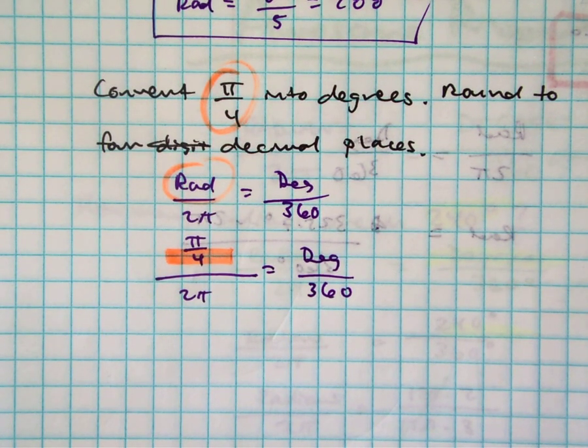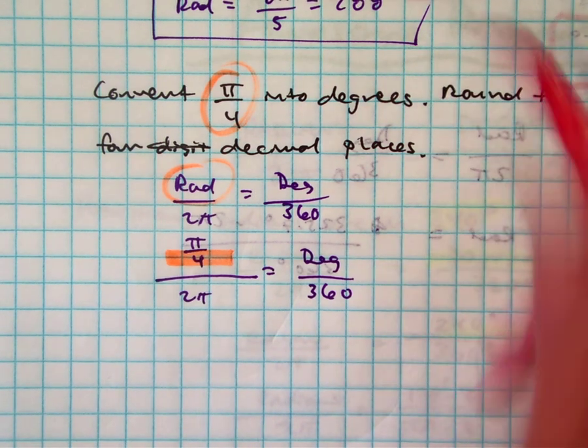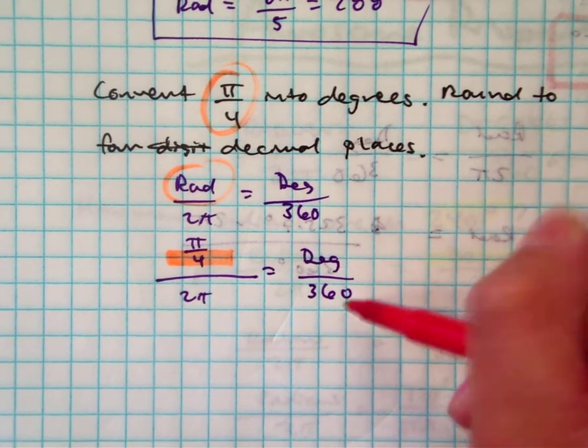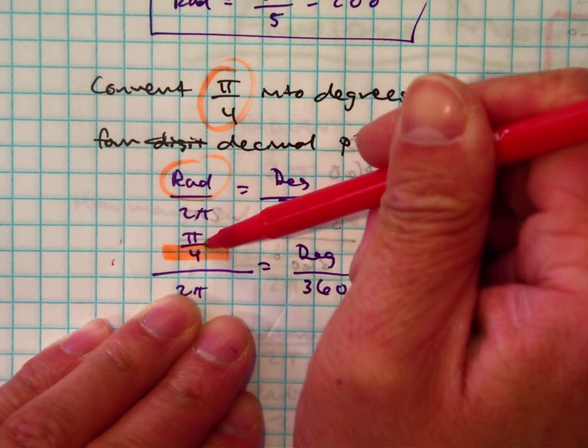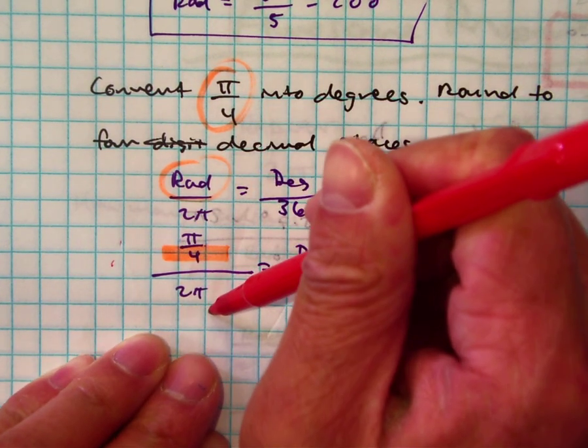Okay, so here you can do a couple of things. I'm trying to solve for degrees. So I can just multiply by 360 and then 360 times π over 4 and then divide my answer by 2π, right?